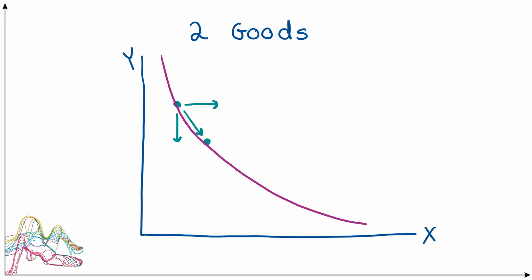We have a bunch of indifference curves, each representing a different level of utility. Here's a second indifference curve, and it's helpful to think about which one makes the consumer happier. I've labeled one ICL and one ICH — L and H for low and high. ICH represents a higher level of utility because going from ICL to ICH the consumer is consuming more of both goods, and since both goods make the consumer happier, having more of both represents higher utility.